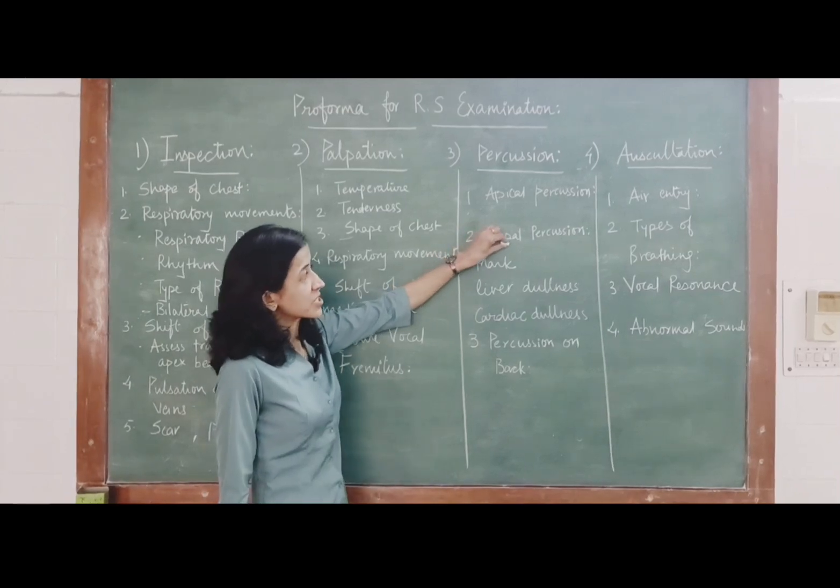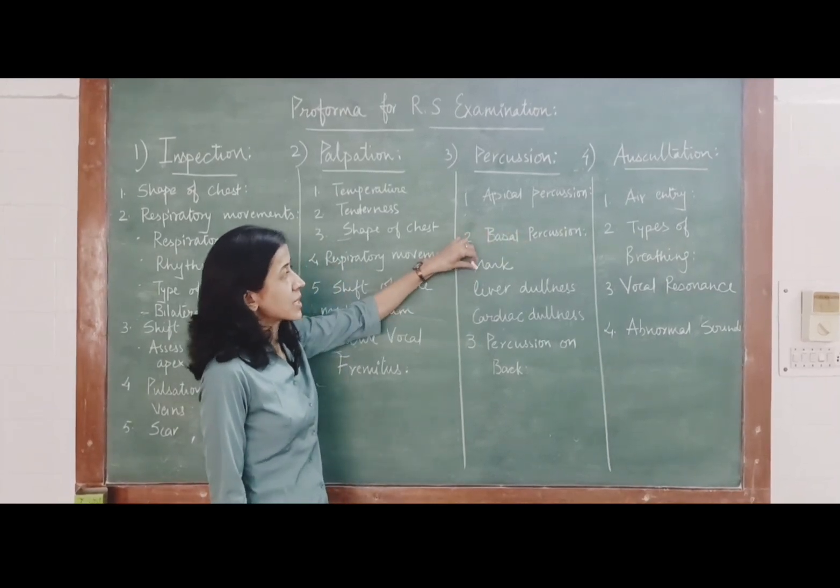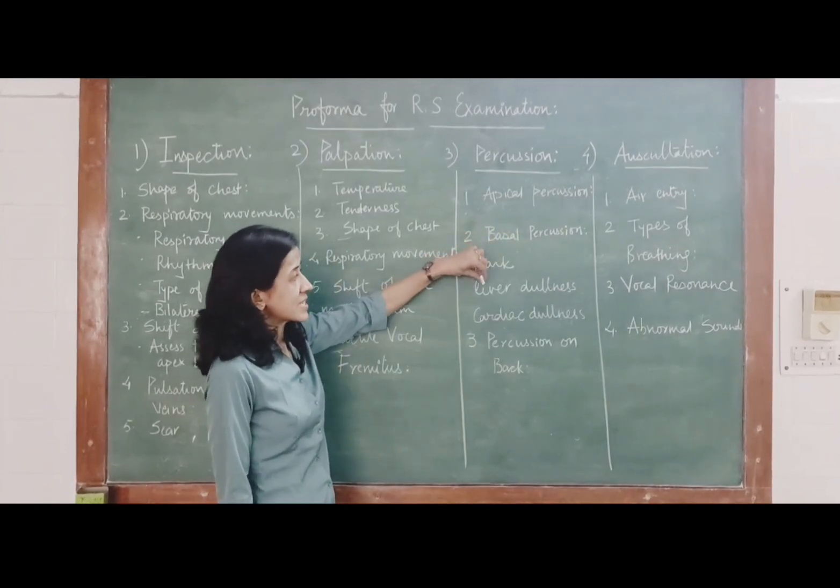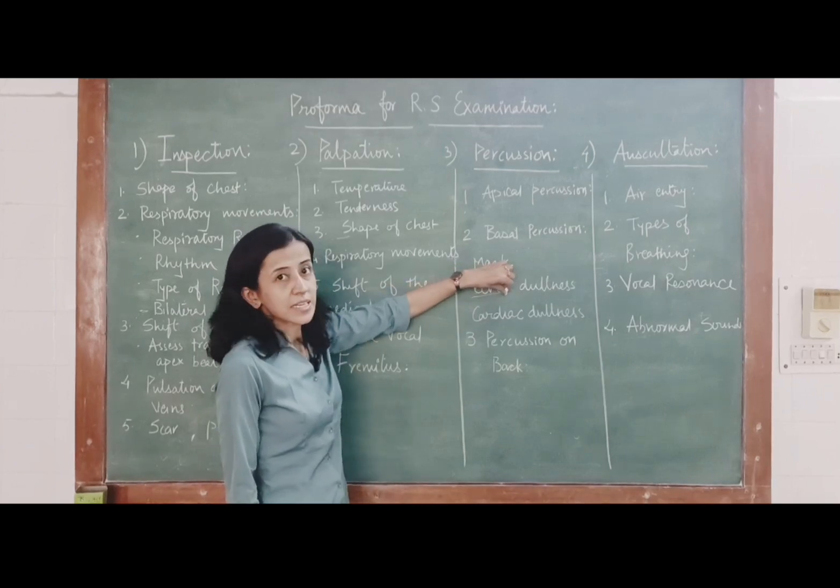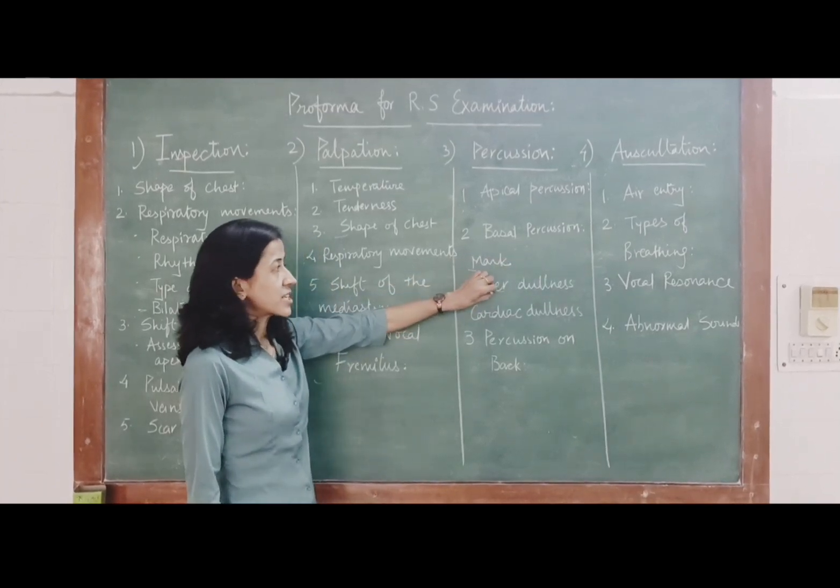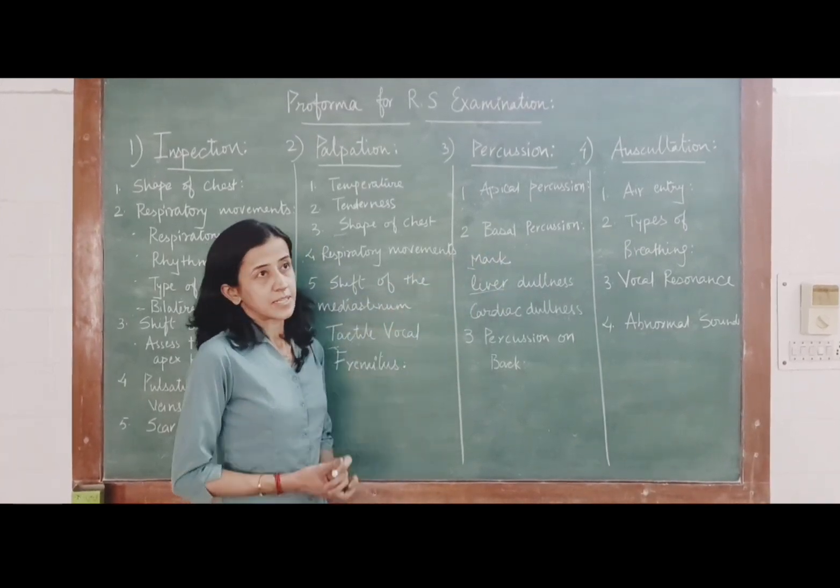Basal percussion is very important to mark the lower border of the lung that is marked by the liver dullness. You have to note down areas of the liver dullness as well as cardiac dullness.